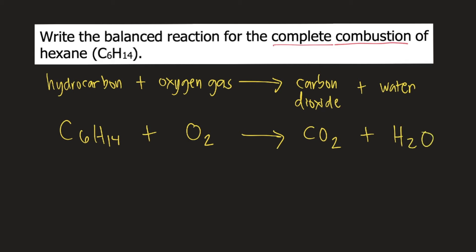To balance this reaction, we need to consider three elements: carbon, hydrogen, and oxygen. The number of each element must be balanced on both the left and right sides of the equation. Here is a tip: balance carbon first, then hydrogen, and lastly oxygen. So let's start with carbon.